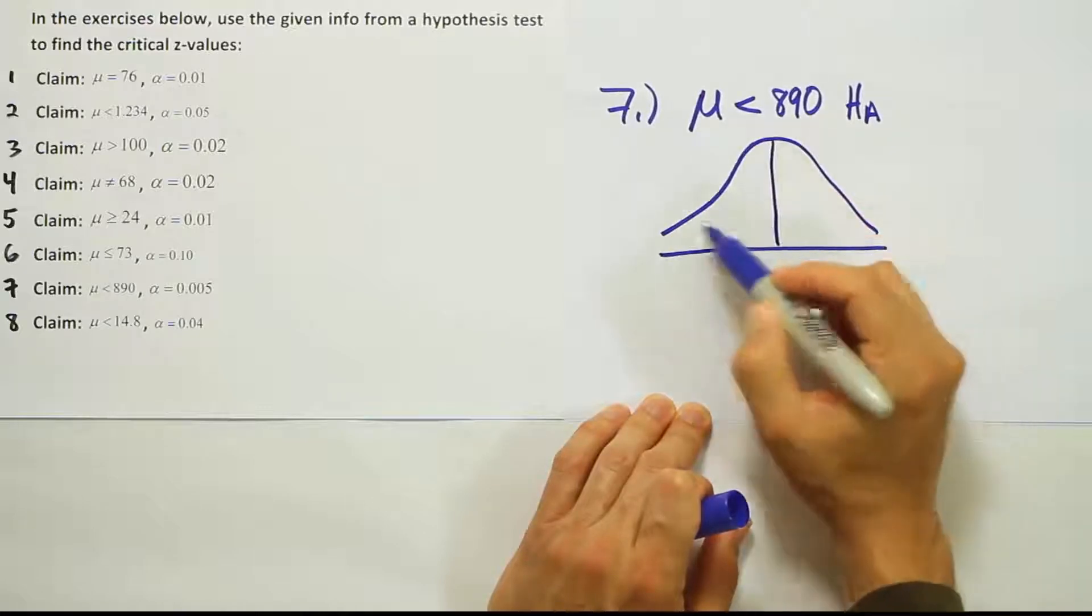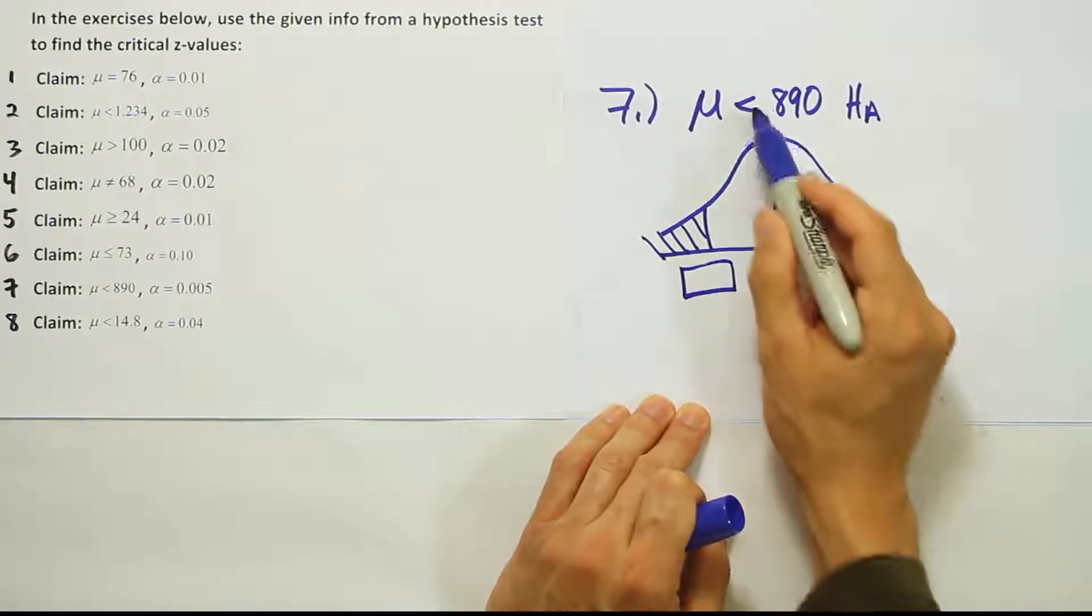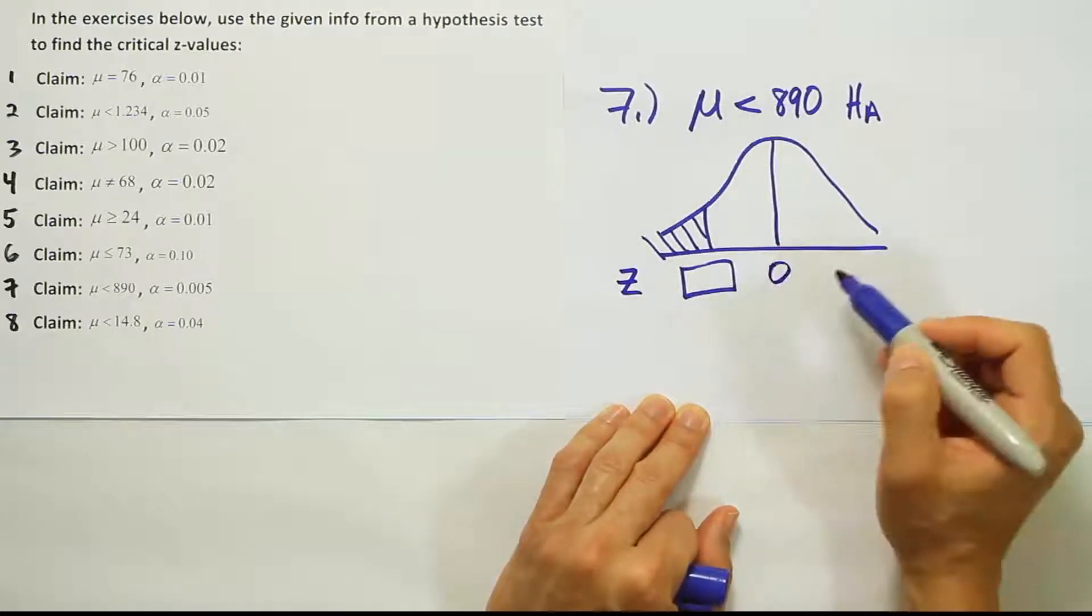We'll draw our bell curve, shade the left tail. Remember that less than means left tailed. When HA has a less than symbol, we're doing a left tailed test.